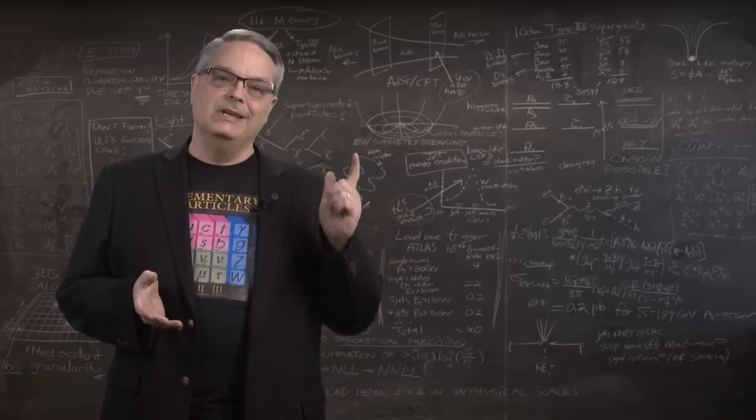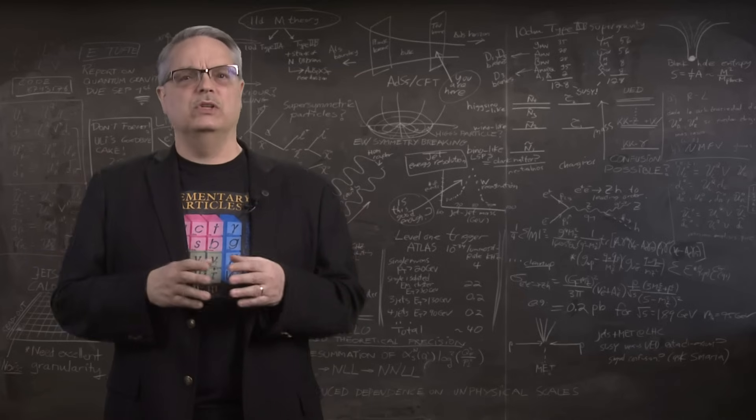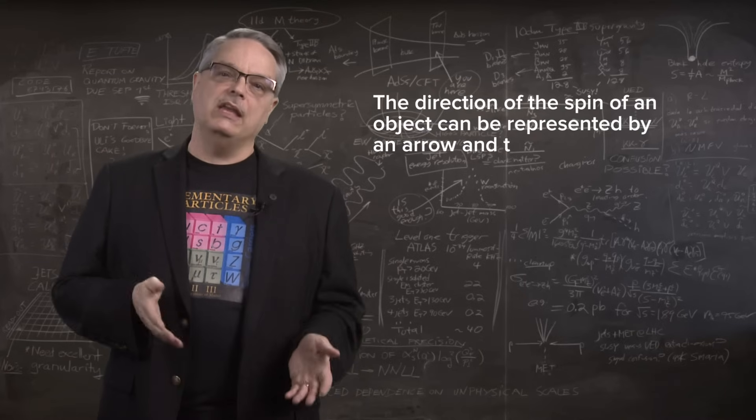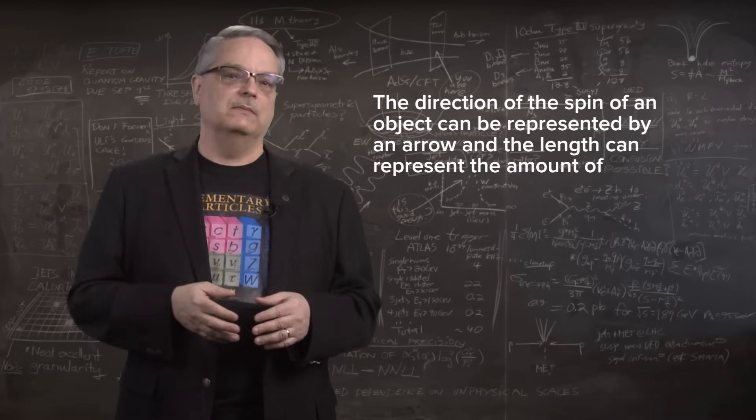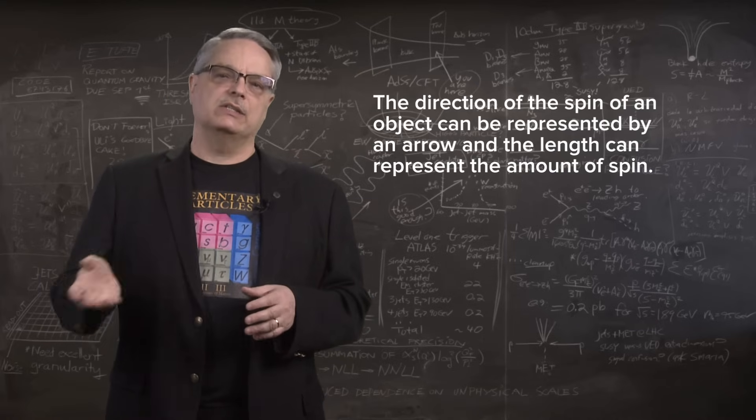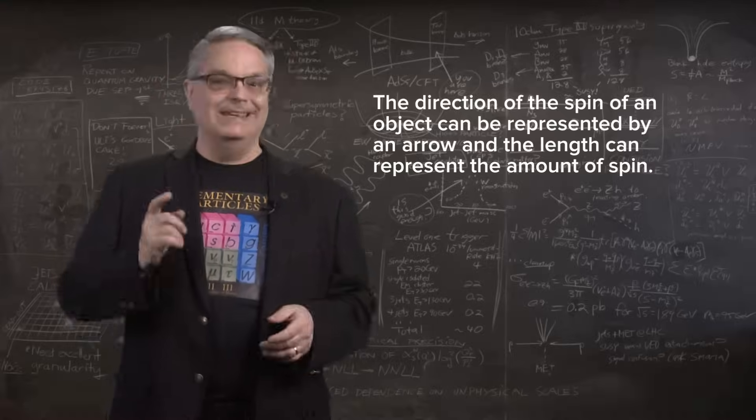In the subatomic world, these classical ideas aren't strictly correct, but they're still somewhat useful. The direction of the spin of an object can be represented by an arrow, and the length can represent the amount of spin. There are definitely major differences between classical and quantum spin. For instance, quantum objects don't actually spin. In addition, the spin axis has to be parallel or anti-parallel to the direction of motion. This is obviously not true in the classical world, but the quantum world is very counterintuitive.